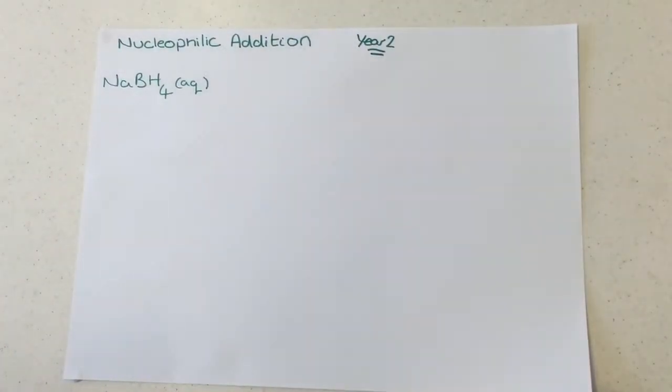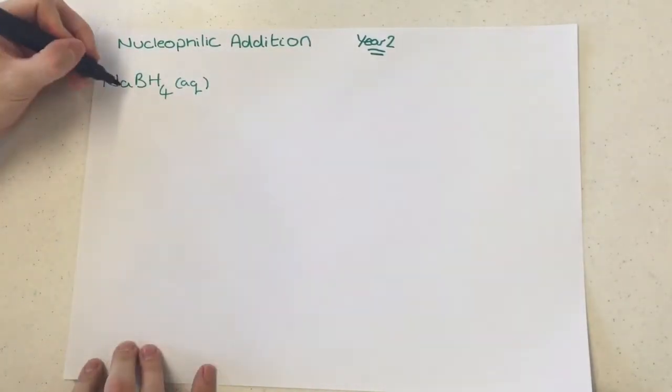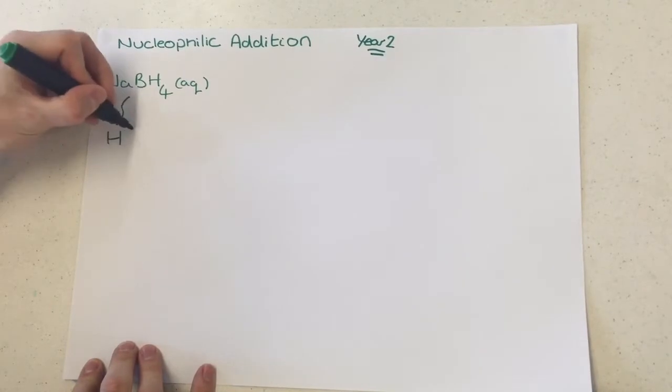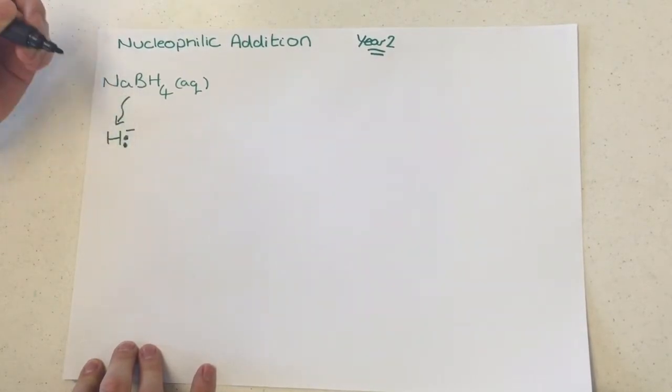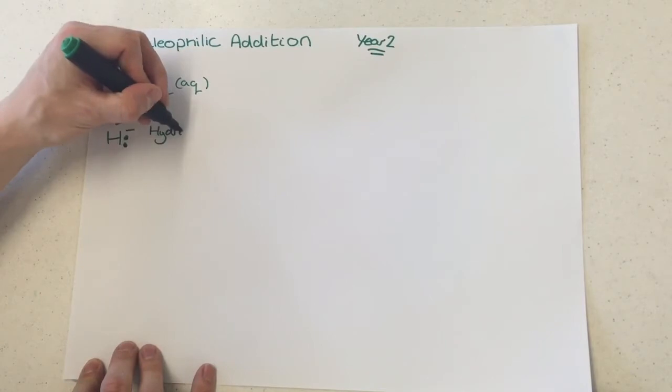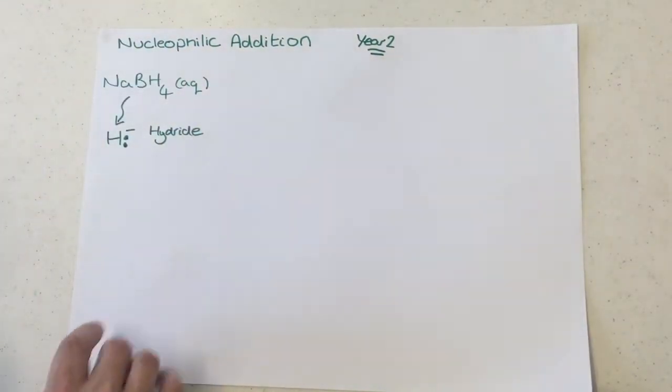We're following the OCR-A specification. Now, I'm using NABH4, which can be in aqueous methanol or ethanol, doesn't matter too much. And the main reason I'm using the NABH4 is because it is a source, that's the important thing here, it's a source of the hydride nucleophile. You can get this other ways, but this is the one that OCR choose to use.